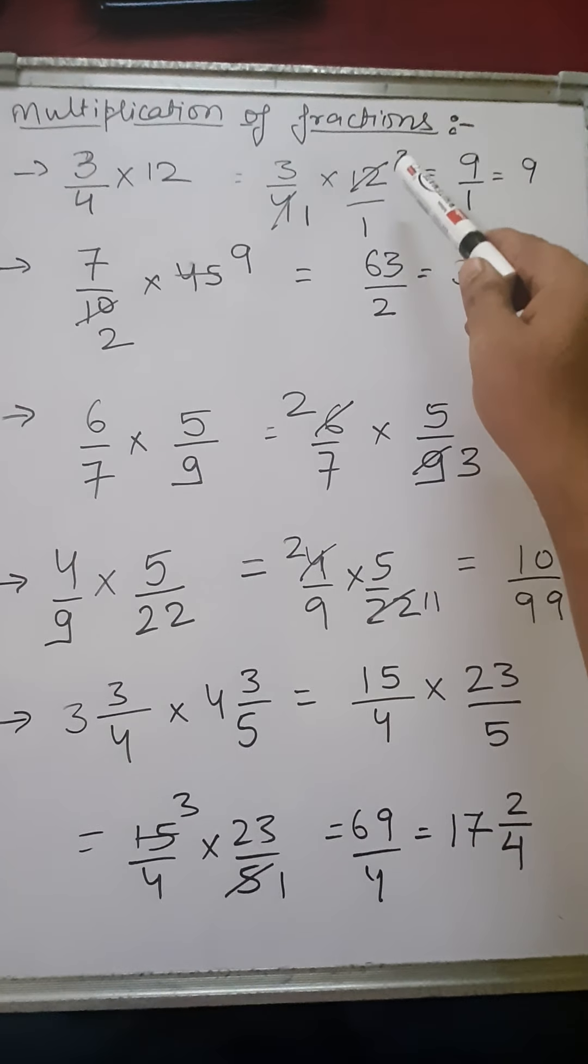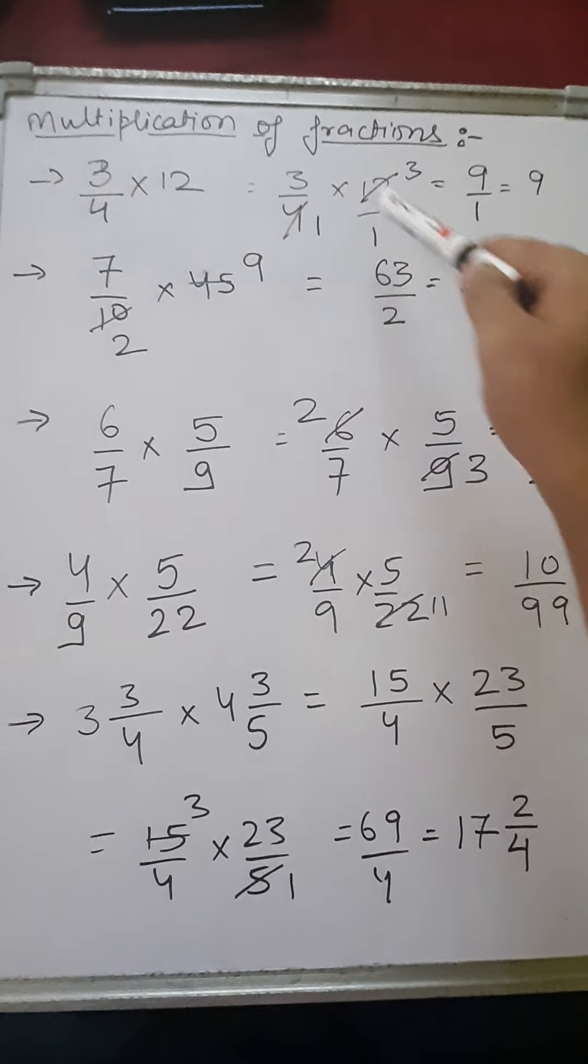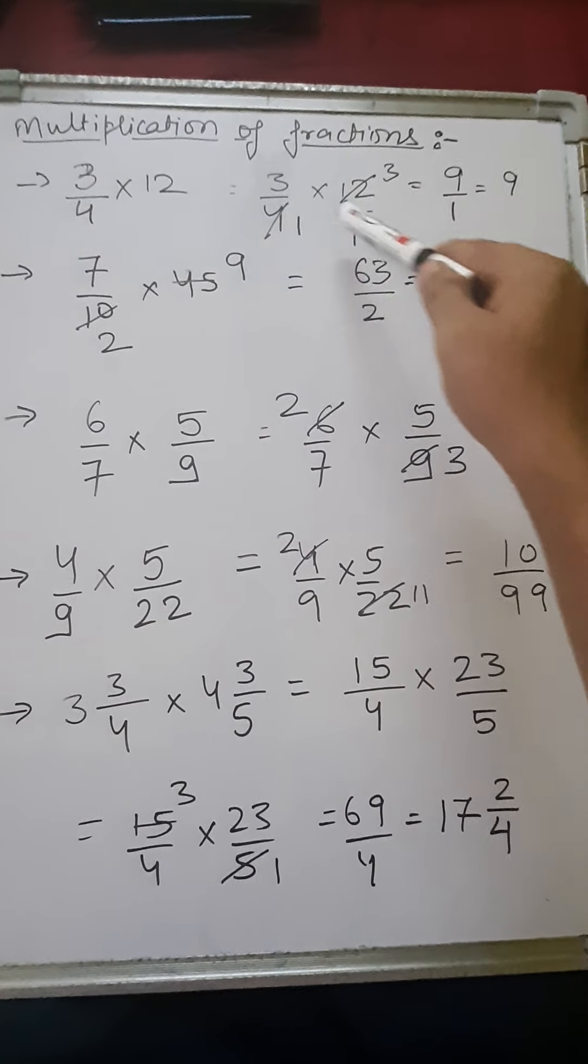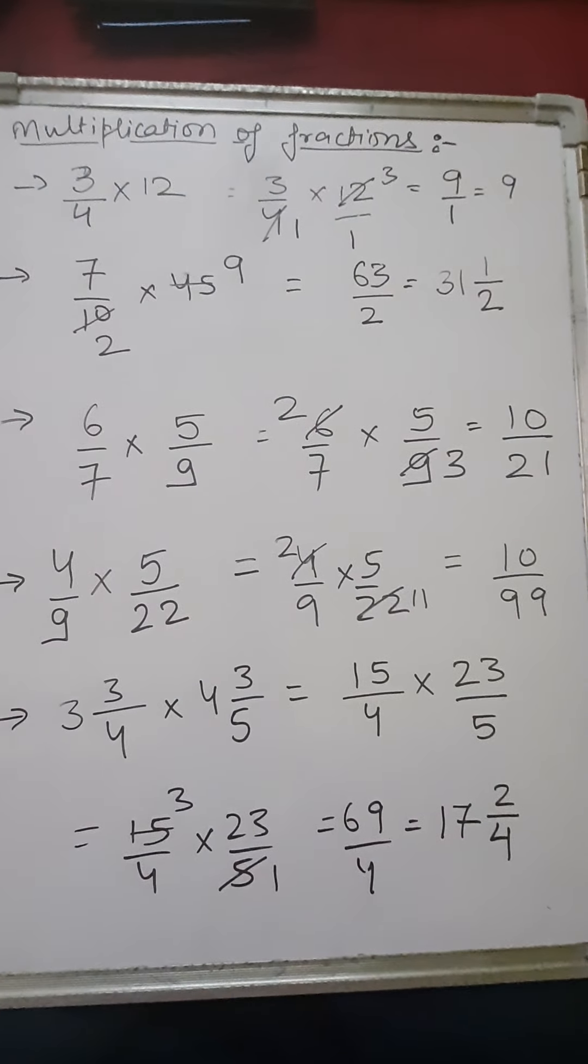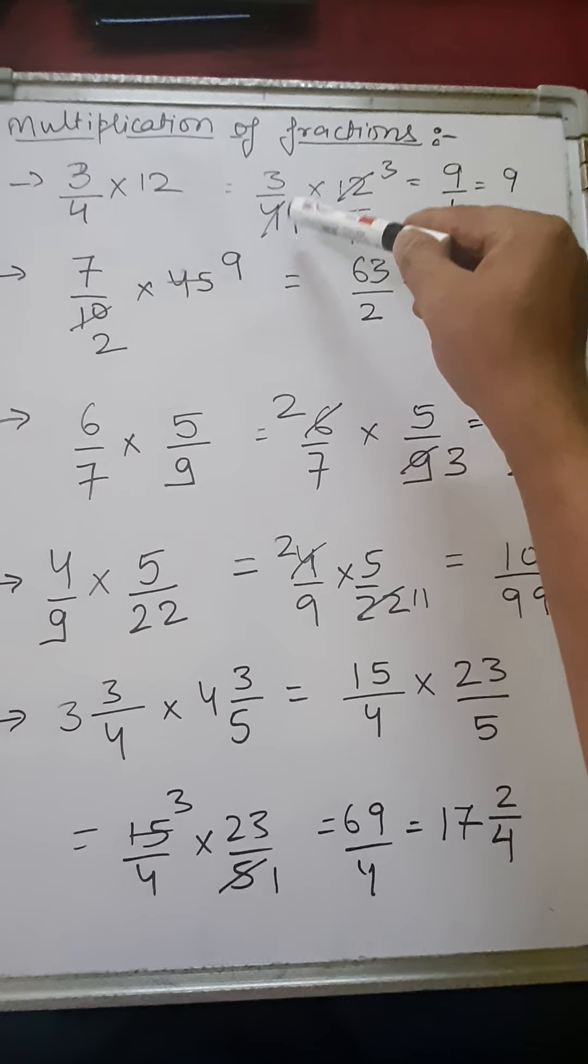The numerator is multiplied to the numerator and denominator is multiplied to the denominator. So we can solve, we can cancel this numerator and denominator. Similarly, we consider this as numerator, so we can cancel this denominator numerator as well.